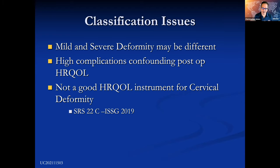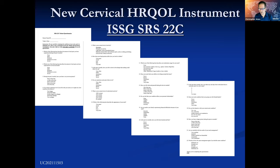The other issue is that, unlike in the thoracolumbar spine, we don't have a good HR-QOL instrument for cervical deformity. The NDI is terrible for getting at what's really important to these patients. Our group is working to develop and validate what we call the SRS-22C, which is a multi-domain HR-QOL instrument for the cervical spine, and we hope to present more work on that in coming years.